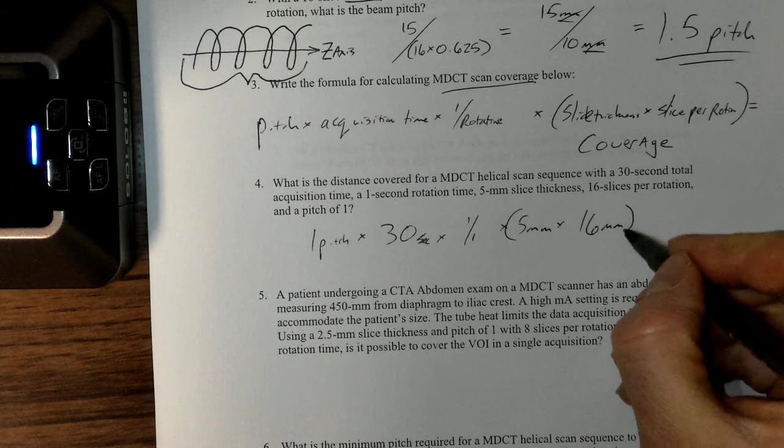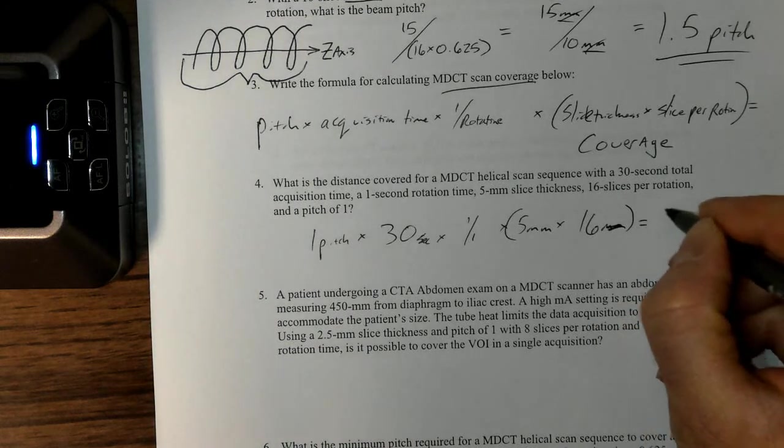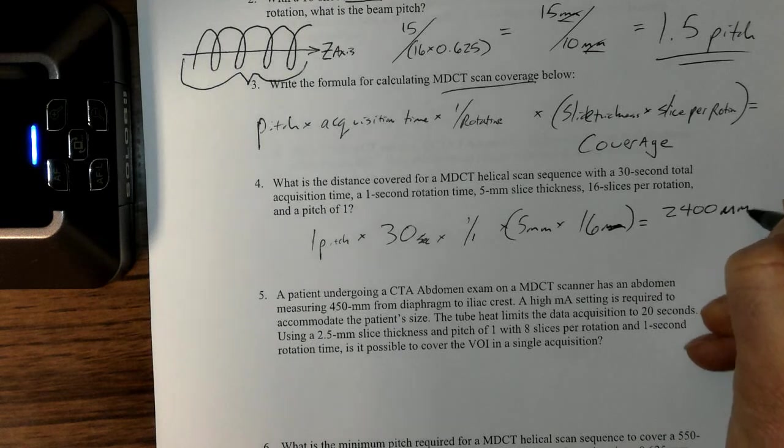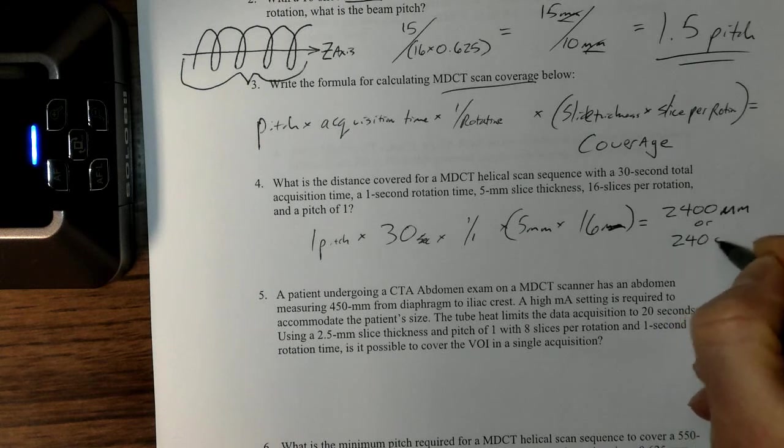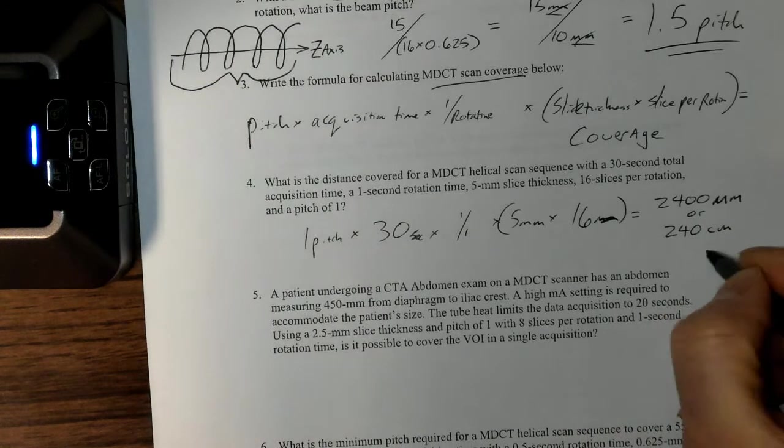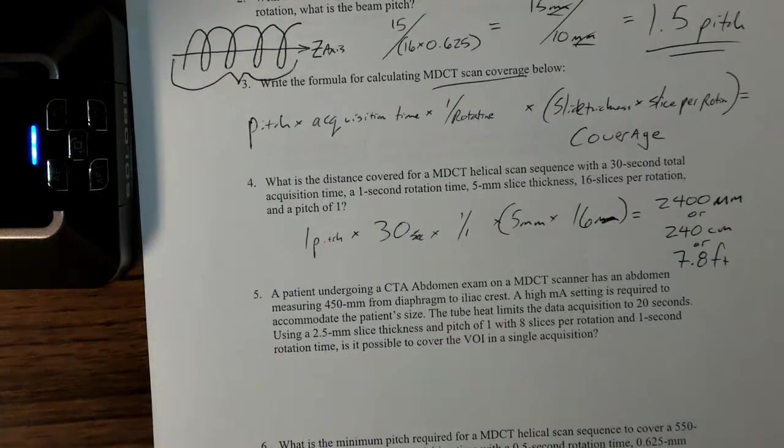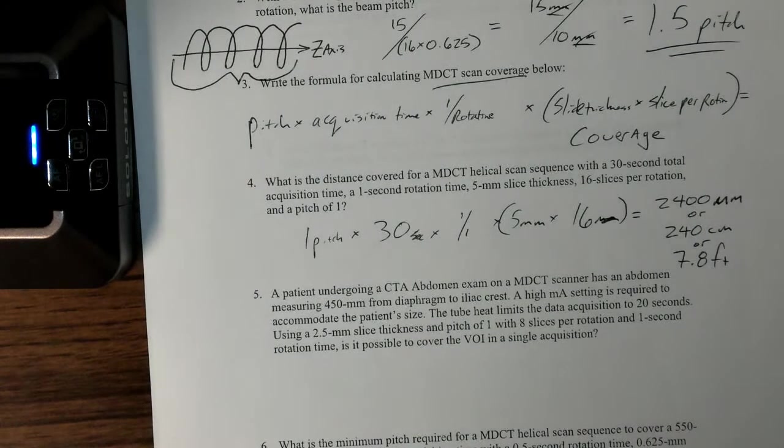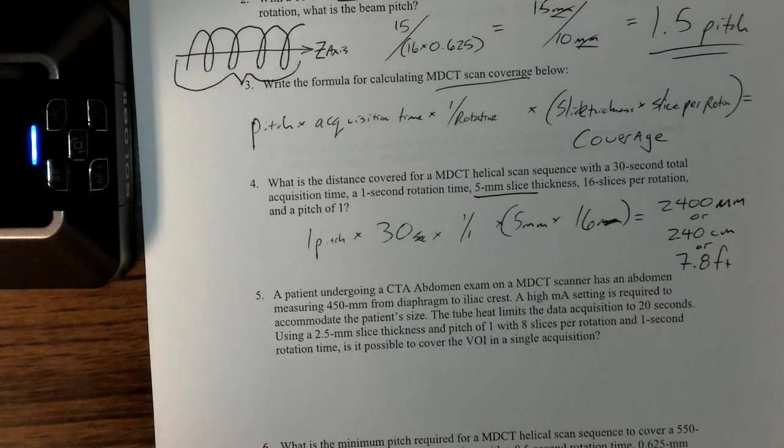This actually shouldn't have a millimeter, but it's just 16. That's the slice thickness and slices per rotation. That's going to give me 2,400 millimeters, or I could put that in centimeters as 240 centimeters, or I could say 7.8 feet either way. This gives me quite a bit of coverage, which stands to reason with the five-millimeter slice thickness.